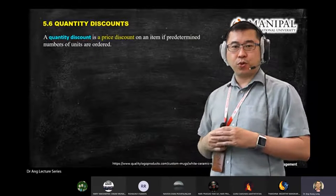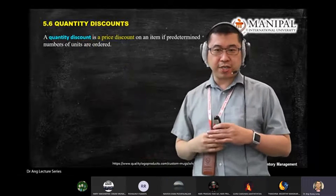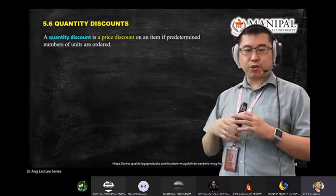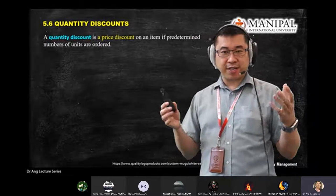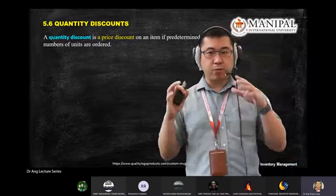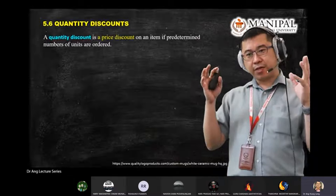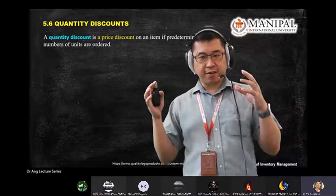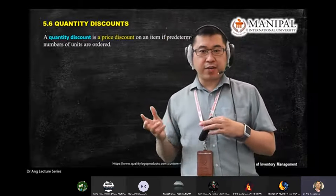However, when you do a discount rate order, you need to consider the inventory space you have. Don't order so much that when the order arrives at your factory, there's no place to put it. If you put it outside, people complain, or because of bad weather, the order gets destroyed and you cannot use it.